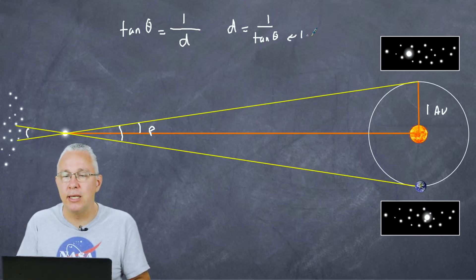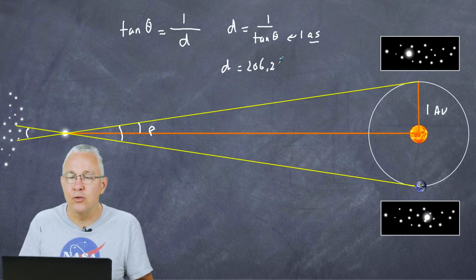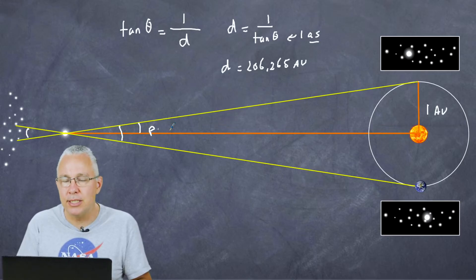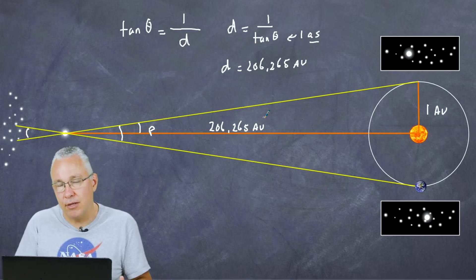What we're particularly interested in is having a particular value in line with one arc second or one second of arc parallax. So if I substitute the angle of one arc second, then my distance ends up being two hundred and six thousand two hundred and sixty-five astronomical units. In other words, this orange line, if my angle is one arc second, then that distance is 206,265 astronomical units. An astronomical unit is simply the distance of the Earth to the Sun.